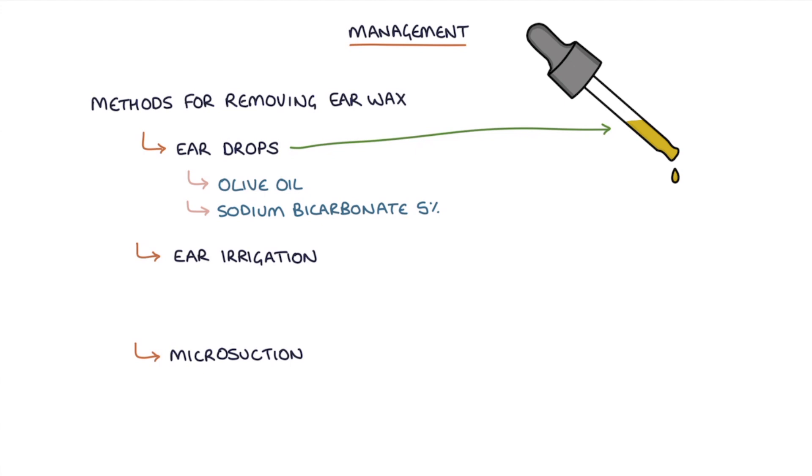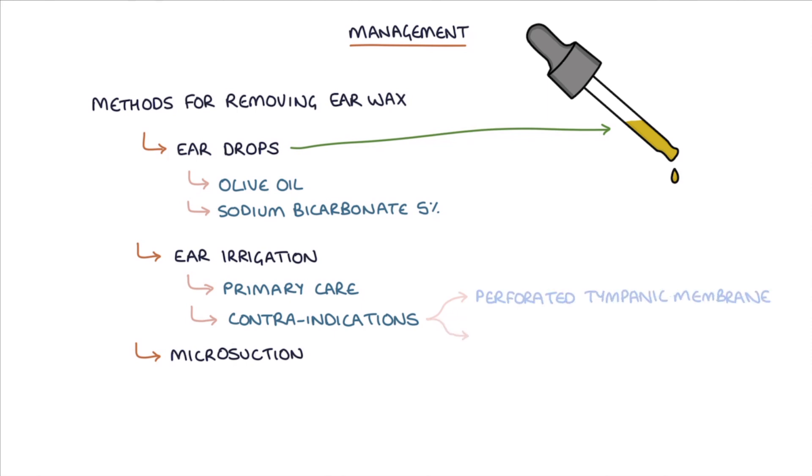Ear drops may be enough on their own to clear the ears. If not, ear irrigation can sometimes be performed in primary care. Where there are contraindications and it's not possible to perform ear irrigation, for example, the patient has a perforated tympanic membrane or there's an infection in the ear, then micro suction can be performed by a specialist ear, nose and throat service.